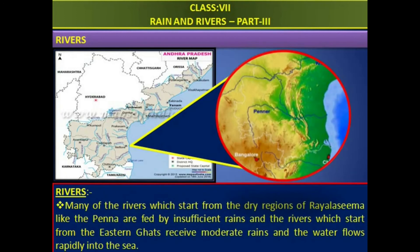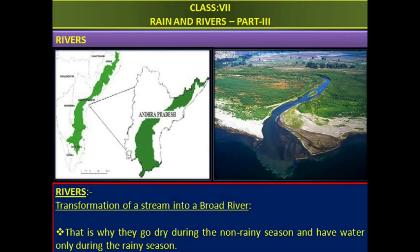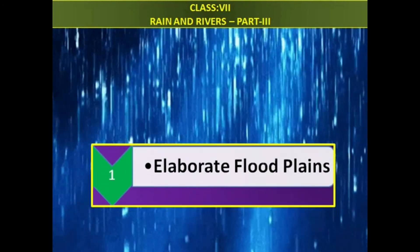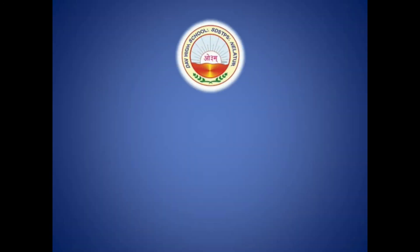Many of the rivers which start from dry regions, like the Penna, are fed by insufficient rains. The rivers which start from the Eastern Ghats receive moderate rains and the water flows rapidly into the sea. That is why they go dry during the non-rainy season and have water only during the rainy season. Dear children, in the next session we will discuss floodplains. Thank you, my dear children.